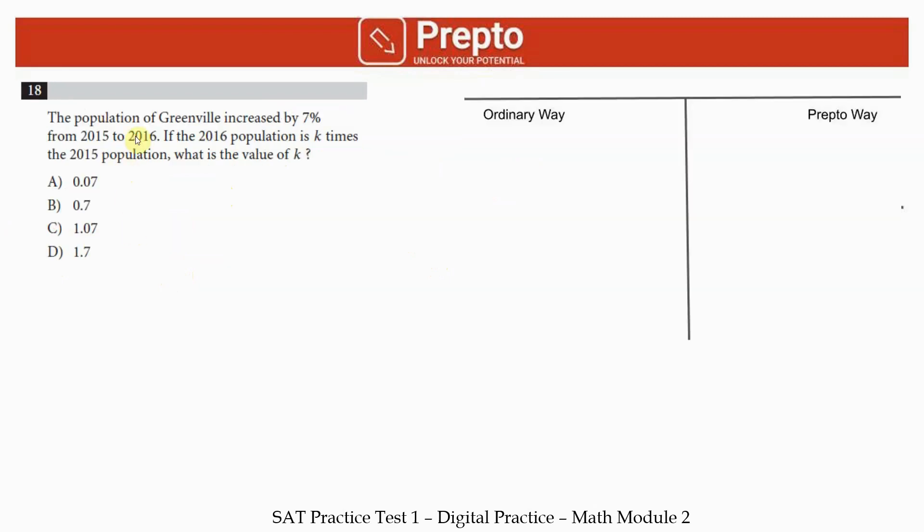Question 18: The population of Greenville increased by 7 percent from 2015 to 2016. If it is k times the 2015 population, what is the value of k? This is a growth equation. Your 2016 value is going to be 1 plus the growth rate which is 7 percent, so 1.07 of your 2015 population. Hence 2016 is 1.07 times 2015.